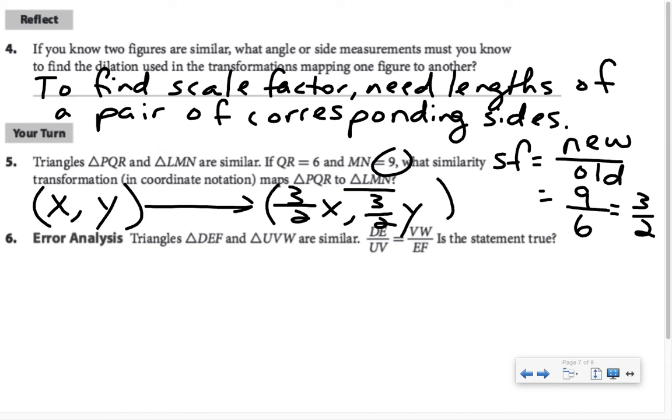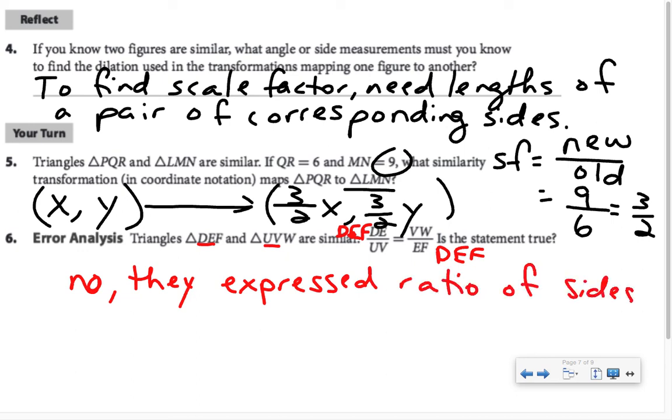Kind of annoyingly, in the book, it calls this problem an error analysis problem. It gives us a statement and says, is the statement true? Probably not, since they're calling it an error analysis problem. Let's take a closer look. They're saying that DE is to UV as VW corresponds to EF. Those are all corresponding segments. However, notice that the order in which they referred to these figures is different. They did triangle DEF on top for the first one, and then they did DEF on the bottom for the second ratio. So the statement is not true, they expressed the ratio of sides in two different orders.